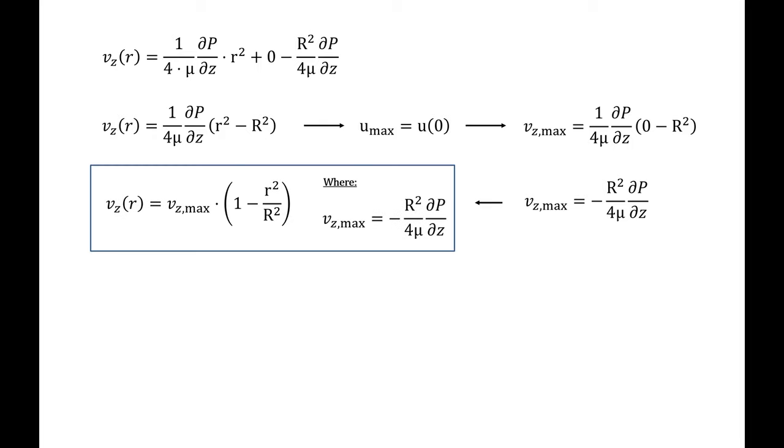Plugging this back in, I have the velocity in the z direction as a function of r is the maximum velocity times one minus little r squared over big R squared, where the maximum velocity is negative radius of the pipe squared divided by four times the viscosity times the pressure gradient driving the flow.